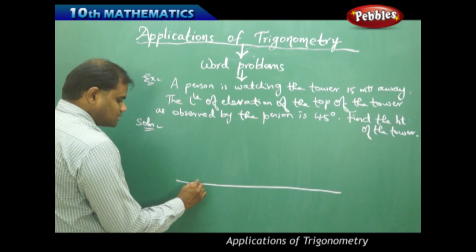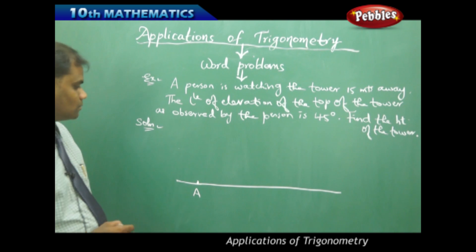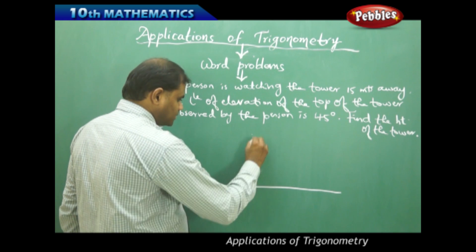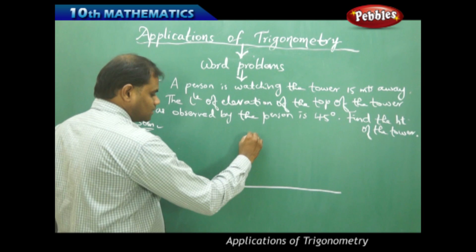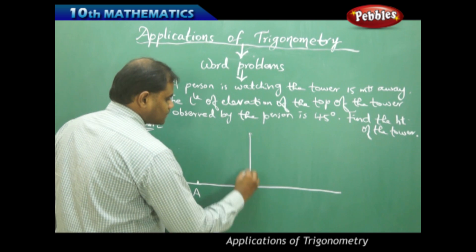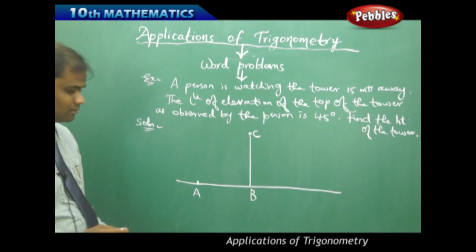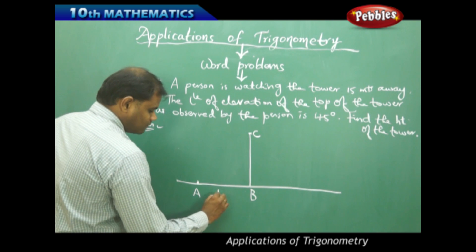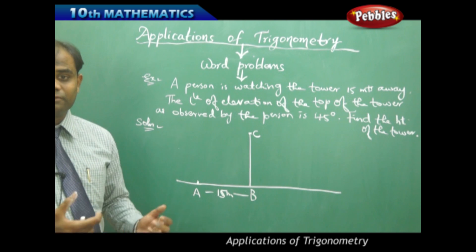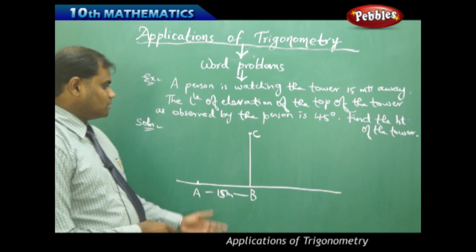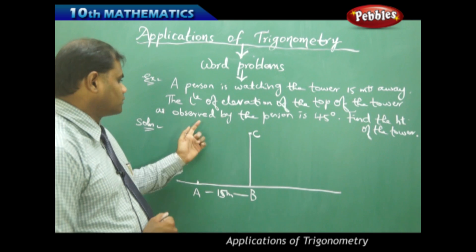Here is the person at point A. There is a tower exactly 15 meters away — it says the person is watching the tower 15 meters away. If BC is the tower, then the person is standing exactly 15 meters away from the tower, that is AB equals 15 meters. It is also given that the person is watching the top of the tower making an angle of 45 degrees.